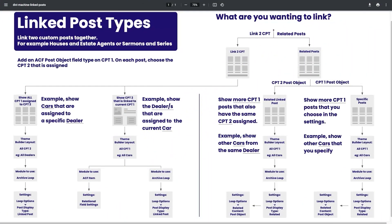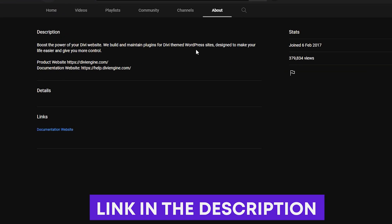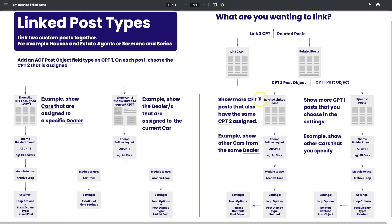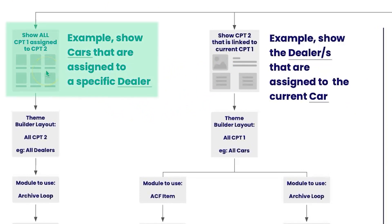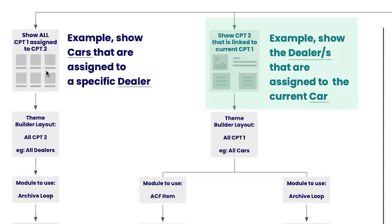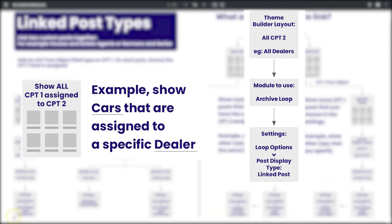Now that we've got that post object field assigned in ACF, we can start linking the custom post types. To simplify the process, we've created a PDF that you'll find both in the description of this video and in the documentation at help.diviengine.com. We're going to start by linking to custom post types and follow the diagram. There are two ways to implement this depending on your use case: the first is to show all cars assigned to a dealer, and the other is showing the dealer that's linked to the current car post.